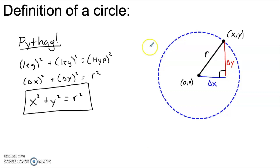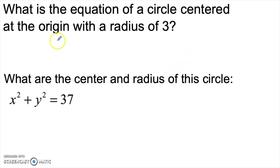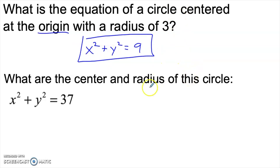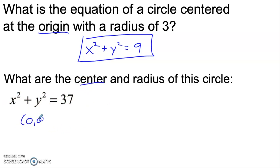So if I wanted the equation of a circle centered at the origin with a radius of 3, that would be x squared plus y squared equals r squared. Since the radius is 3, that's 3 squared or 9 — so the equation is x squared plus y squared equals 9. What about the equation x squared plus y squared equals 37? Where is the center? It's (0, 0).